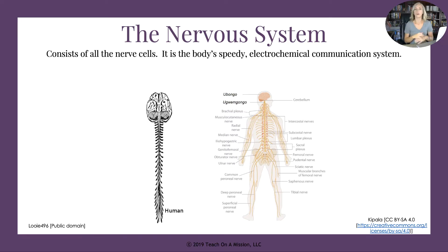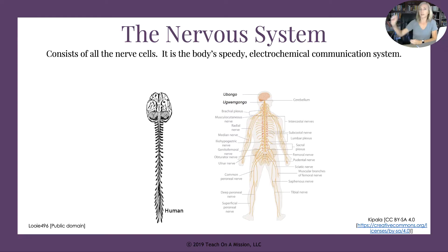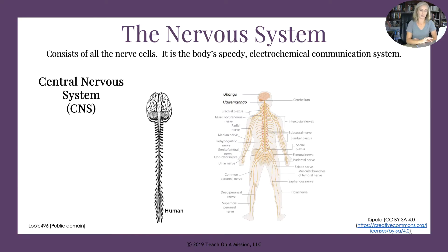The nervous system consists of all the nerve cells — all the nerves in your entire body. It's the body's really fast electrochemical communication system, meaning it's both electric and chemical. In a neuron it's the electrical impulse going down the axon, but then at the axon terminal buds they release neurotransmitters, which are chemical. So it's that electrochemical communication system.